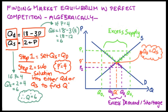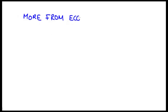So I hope you can remember to follow those steps: set Q subscript S equal to Q subscript D, solve for one of the variables — solve for P — and then plug that back into your supply or demand curve. I hope also you understand why we need QD equal to QS. There's so much more to say here, and hopefully I'll be able to do more videos in the future that address other aspects of equilibrium in perfect competition. If you liked this video and it helped you, please like and subscribe for more economics and math help. You can leave any comments below — I'd love to hear from you. Thanks so much for watching, have a really great day.